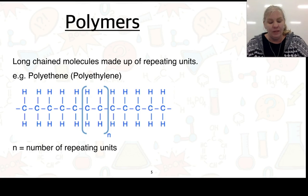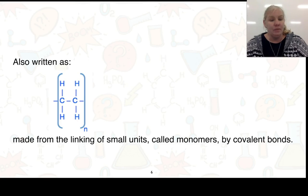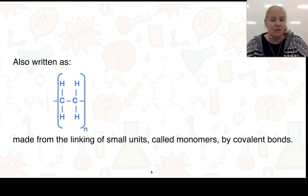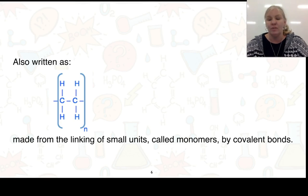We know that it is 'eth', so there had to be two carbons inside the repeating unit. It can also be written in another form, where we have bonds on the side showing that it continues on. n tells you the number of linking units, which are called monomers — monomer meaning one, polymer meaning many.